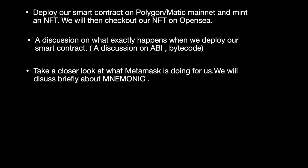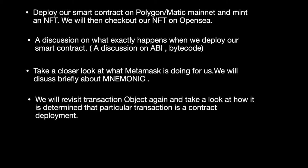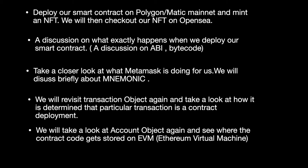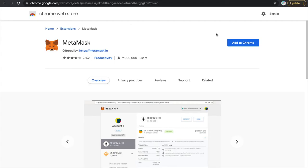We'll also take a closer look at what MetaMask is doing for us and discuss Mnemonic briefly. Recall from our last video: there are two types of accounts — an externally owned account and a contract account. Externally owned accounts are controlled by users like you and me, having a private key. So in Ethereum terminology, MetaMask is an externally owned account. We'll also revisit the transaction object and look at how it is determined that a particular transaction is a contract deployment versus a regular transaction.